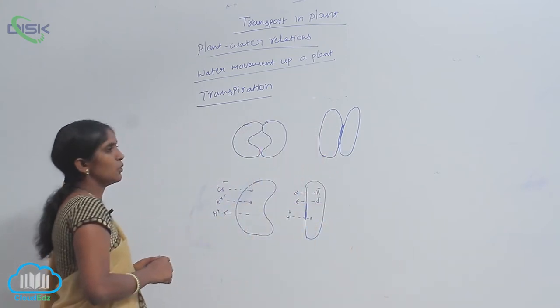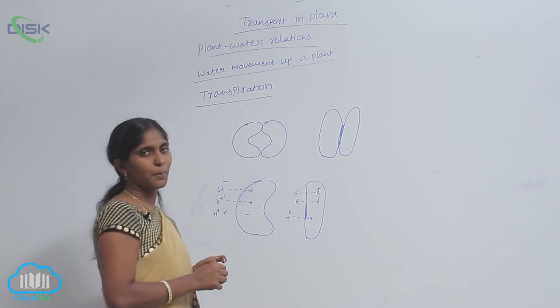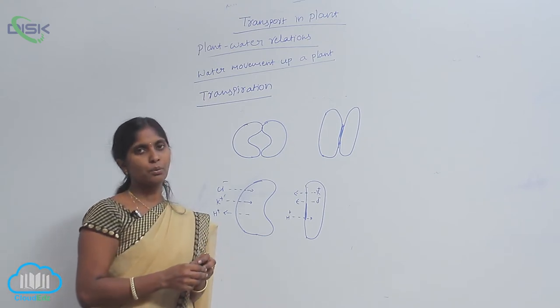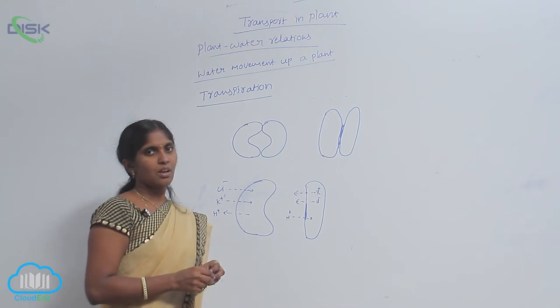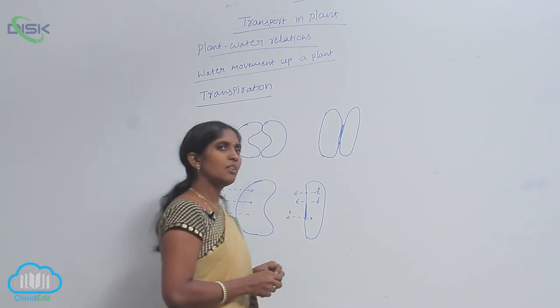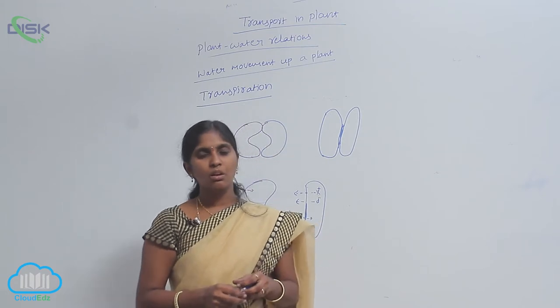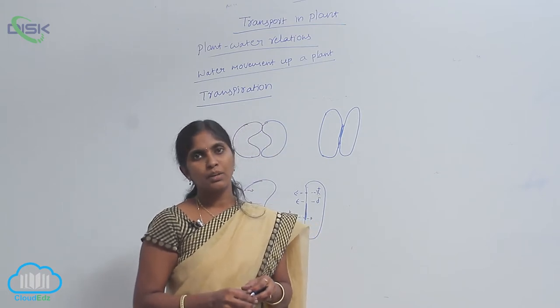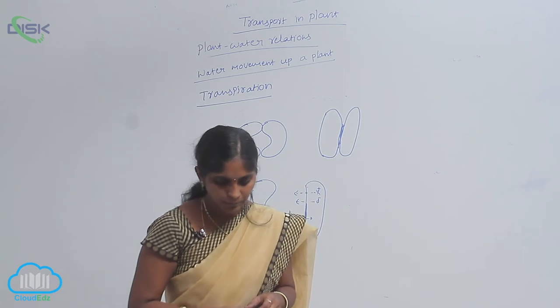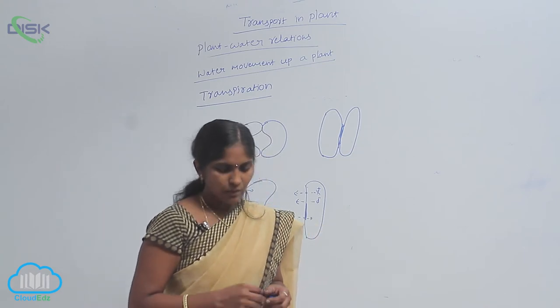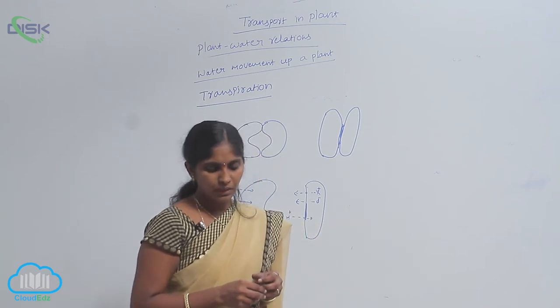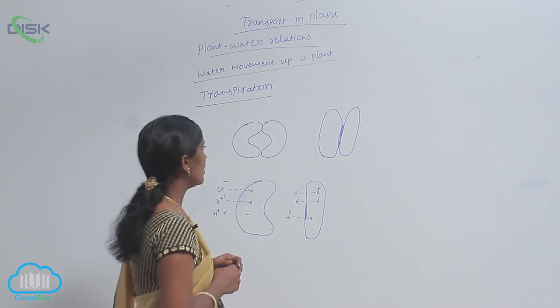When the guard cells absorb the water, they become turgid. The turgid cells easily become crescent-shaped and the stomata pore opens. The opening of stomata also depends on the orientation of microfibrils present in the cell wall of guard cells.